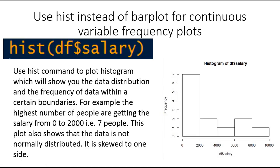For example, the highest number of people are getting salary from 0 to 2000, that is seven people. This is the number of people, that is the frequency. Two people are getting salaries from 2001 to 4000, and so on. This plot also shows us that the data is not normal — it is skewed to one side. So this is the skewness of the data.